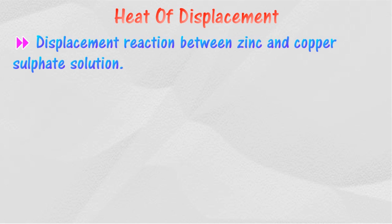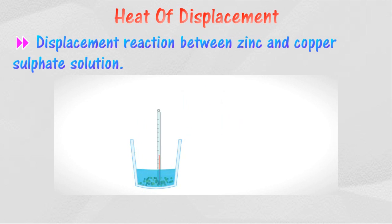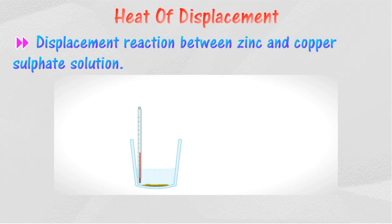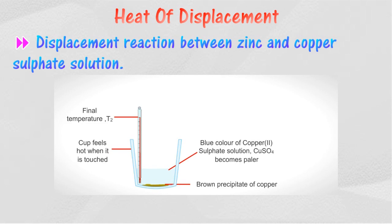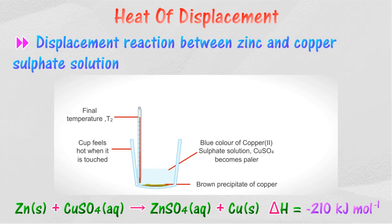When zinc powder is put into the copper(II) sulfate solution, the zinc powder dissolves and a brown copper solid is displaced from the solution. The reaction is exothermic because the container becomes hotter and the thermometer registers a rise in temperature. One mole of copper is displaced from a copper(II) sulfate solution by zinc to release 210 kilojoules of heat.